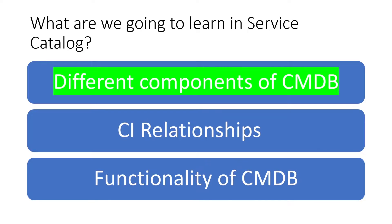From today's video: the different components of CMDB have already been done in the last video. Today we'll understand CI relationships and, as the video title suggests, we'll see how to create a configuration item and then create a CI relationship from our own configuration item. It's going to be very exciting.